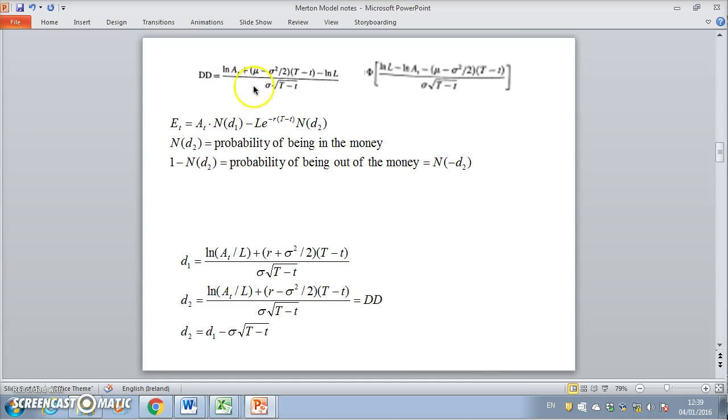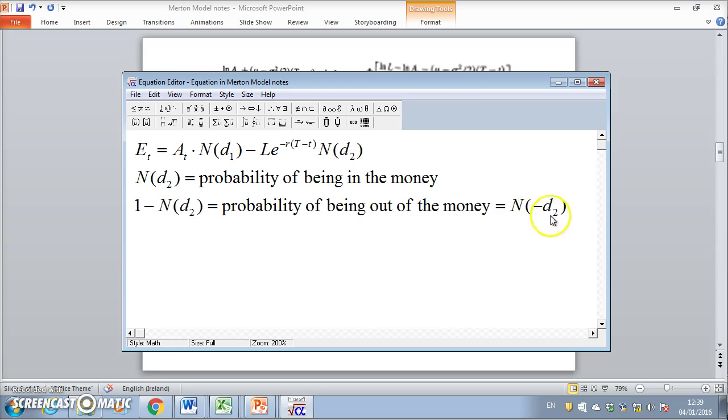In the previous video I had outlined the distance to default and then the probability of default. It should be noted that N(-d2) in option theory is understood to be the probability of being out of the money.